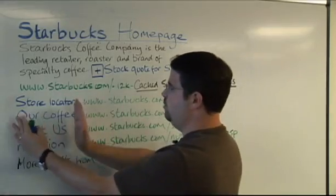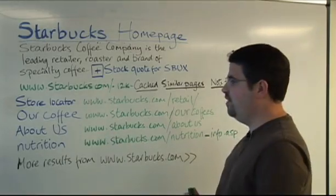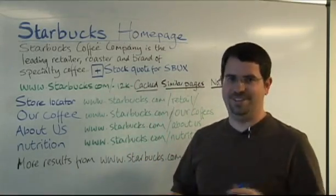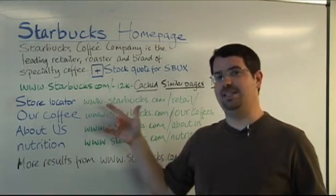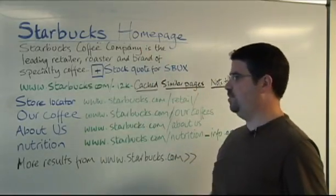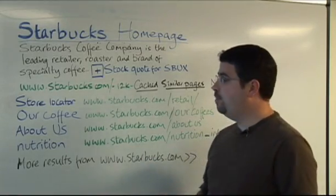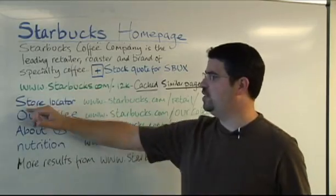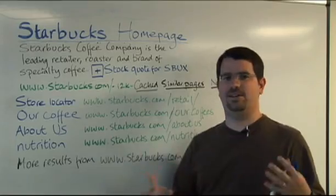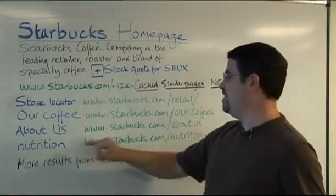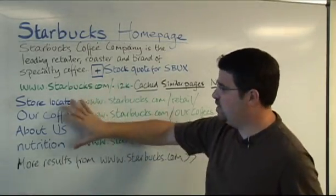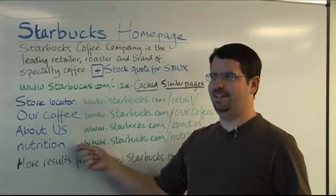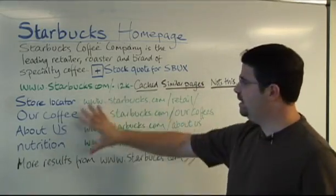This would be a little indented on the snippet — what we call this is site links. There are a couple of things you need to know about site links. First off, no money is involved. Someone always asks, 'Did Starbucks pay money to get that?' No. It's completely algorithmic — there's no money whatsoever. It is completely algorithmic, not done by hand. So it's not like we go to Starbucks and say they'd be interested in the store locator and nutrition. There is a lot of sophistication going on. For example, the title of one page is 'Starbucks store locator' but you don't need to see that multiple times, so we just say 'store locator.' We try to pick the shortest description that gives people enough information to say the store locator is what I want — I'm going to go directly there, or I want to find out how many calories are in a no-whip mocha so I can go straight to the nutrition page.